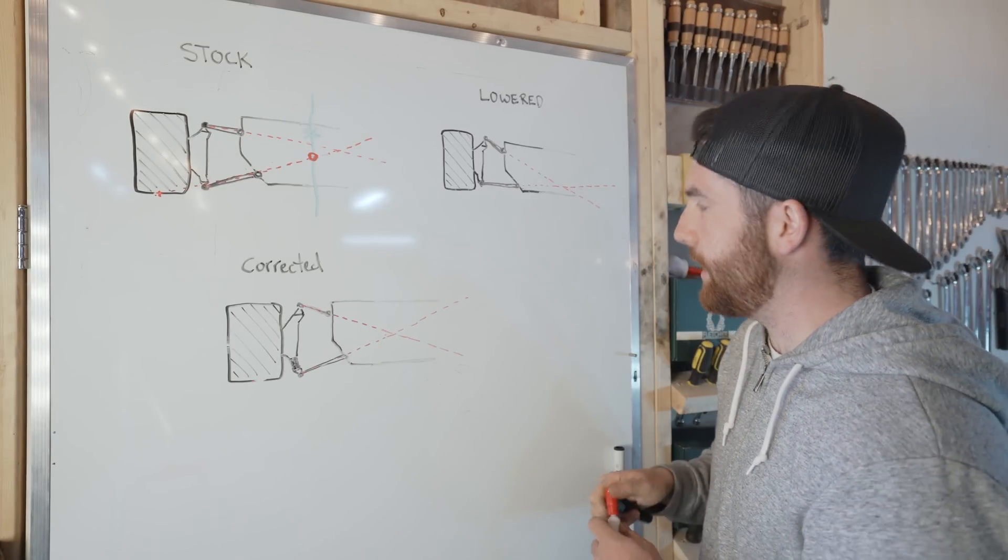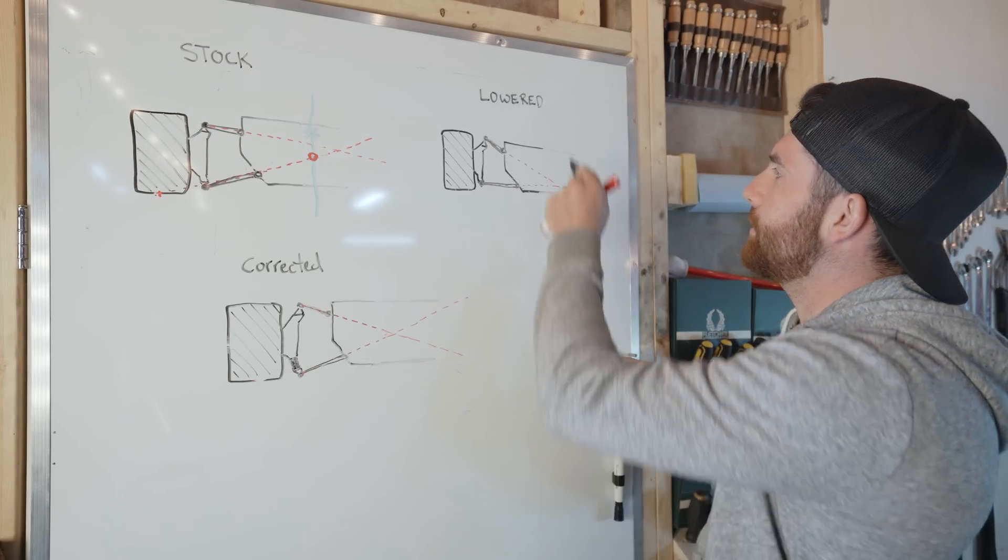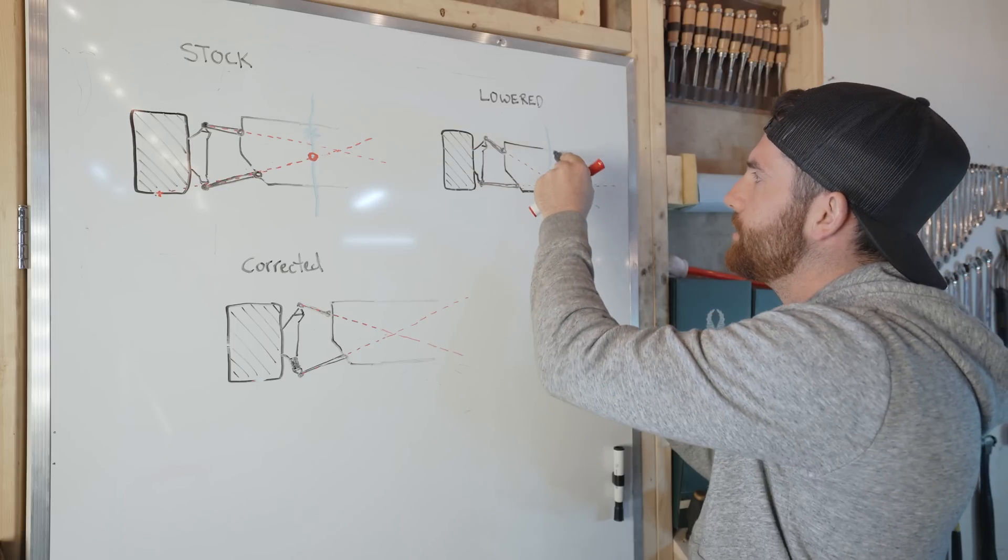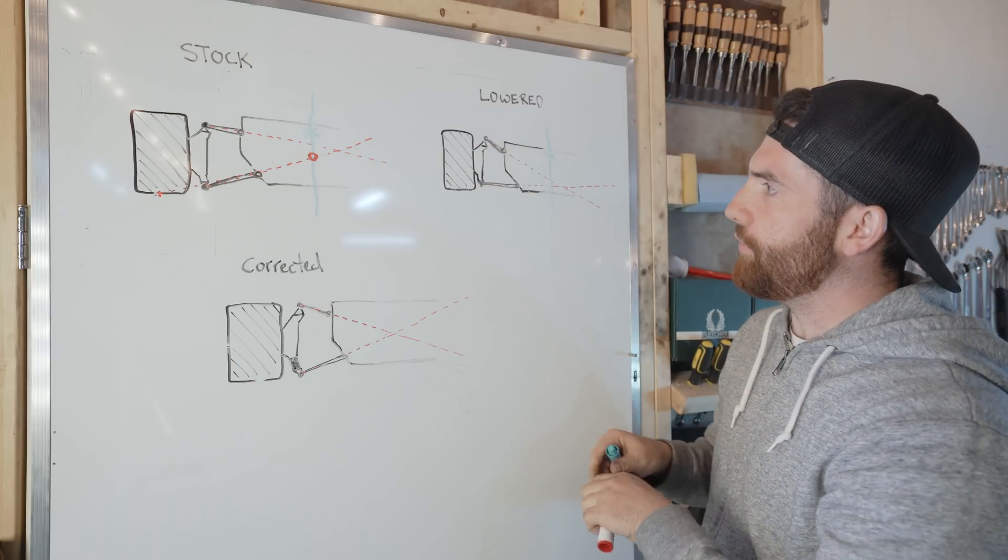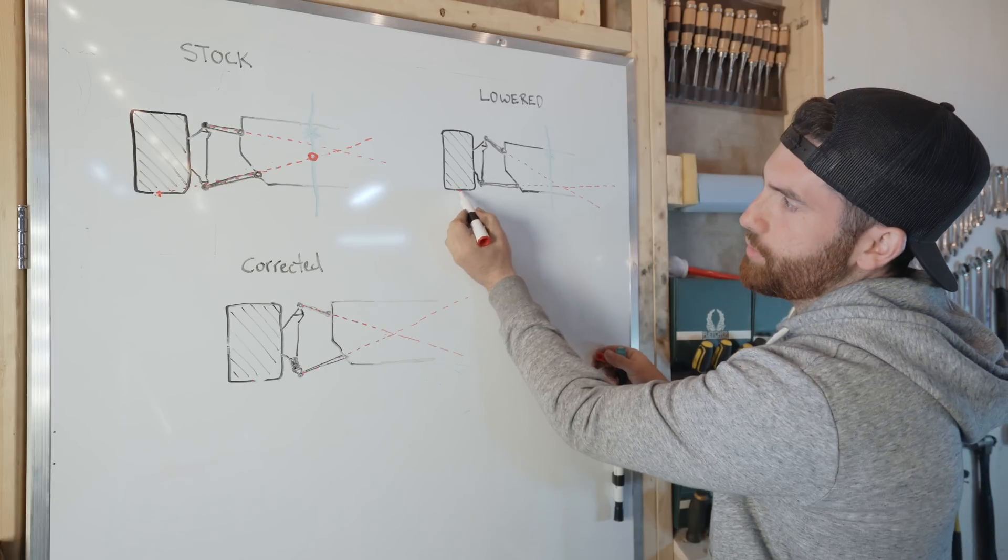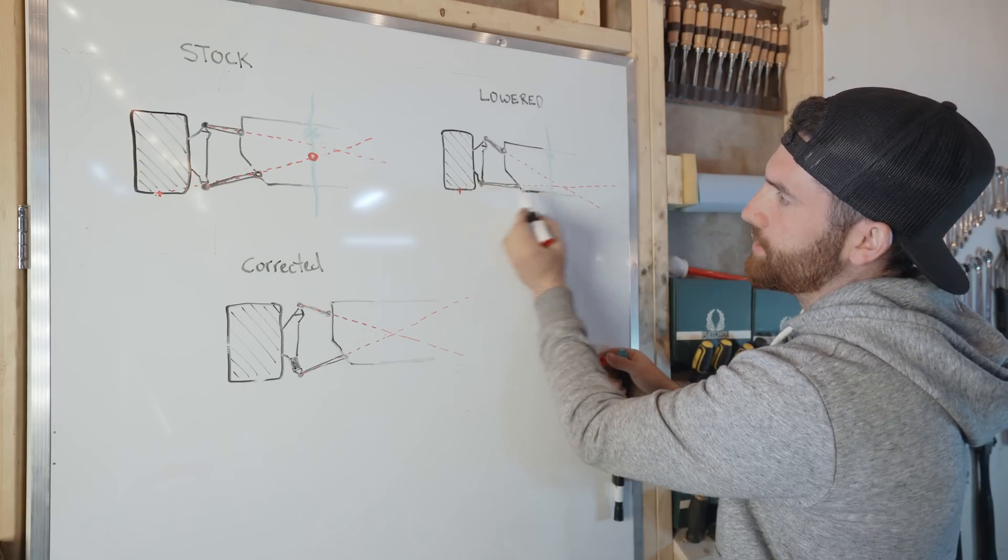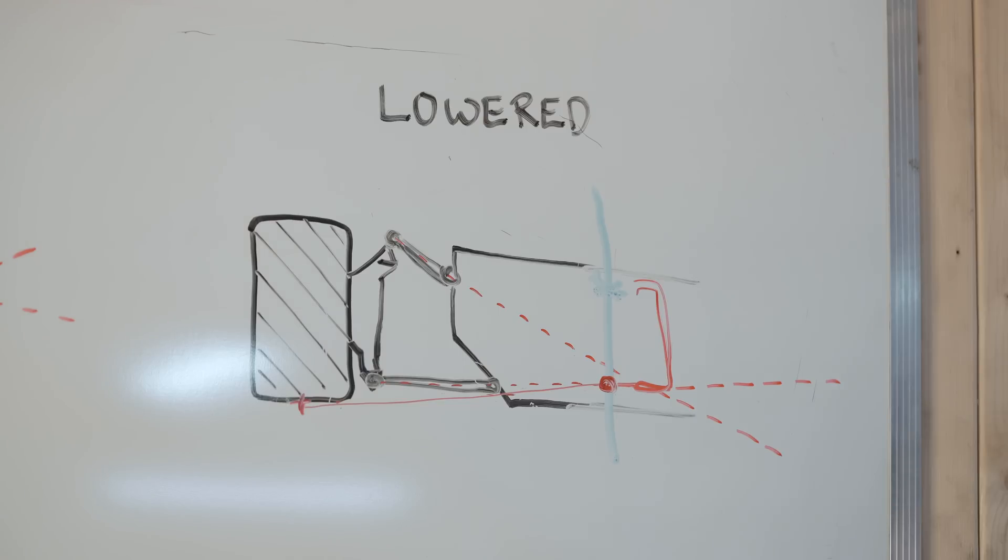So what we do is lower the car, and that's demonstrated here. Now the problem with lowering the car is that it also affects your roll center. And if I were to draw the same line, let's say right here is going to be the center line of the car.